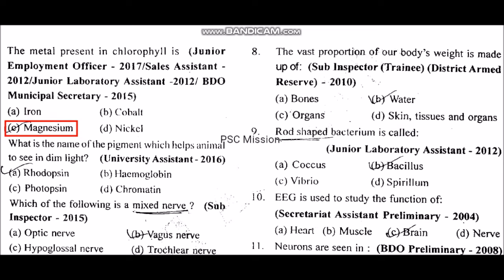What is the name of the pigment which helps animals to see in dim light? The pigment that helps animals see in dim light is rhodopsin.